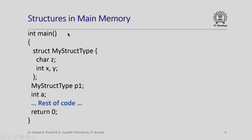Let us quickly see how structures are going to be laid out in main memory. Here is a simple program — this is the main function within which I have declared a structured data type, my struct type. This has three members: member z is of type character, members x and y are of type int. Then I have a variable p1 of structure type my struct type, and I also have a variable a of type int.